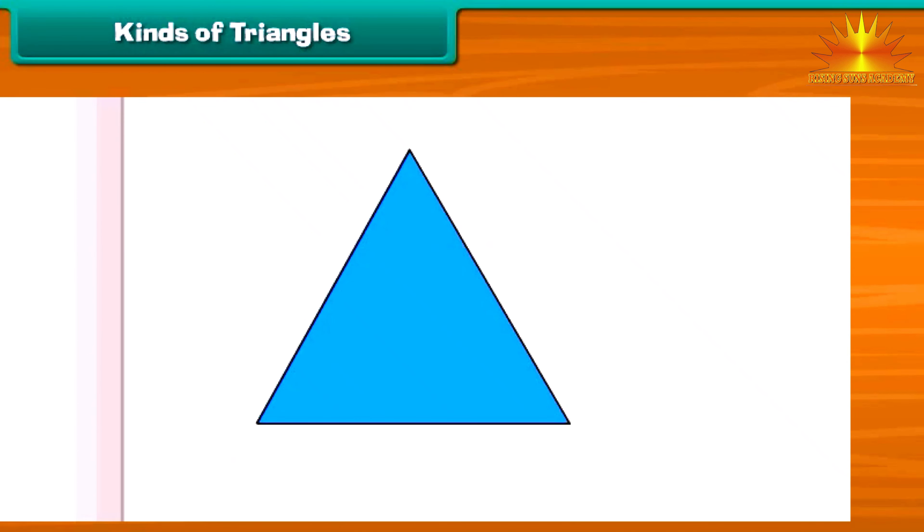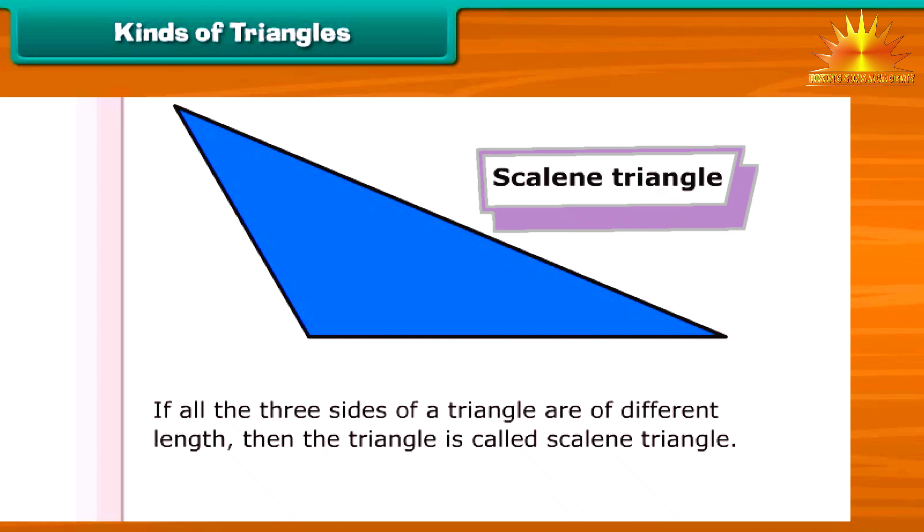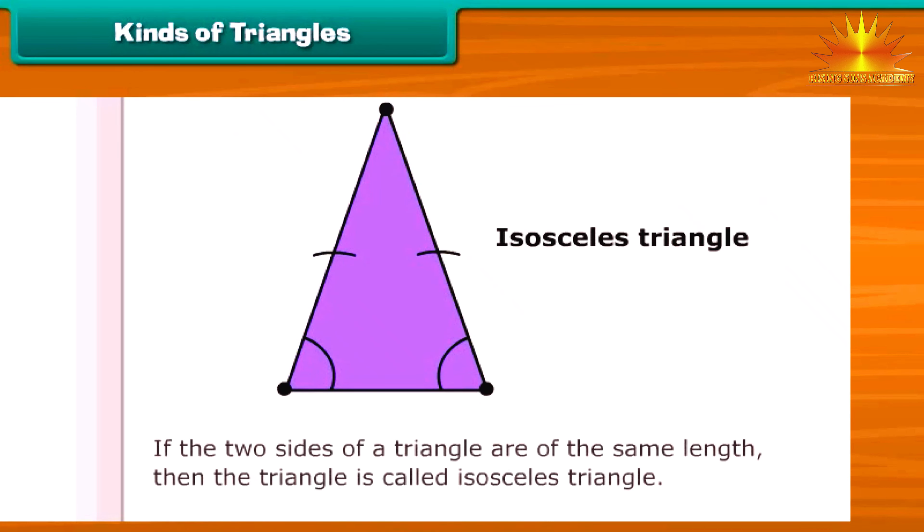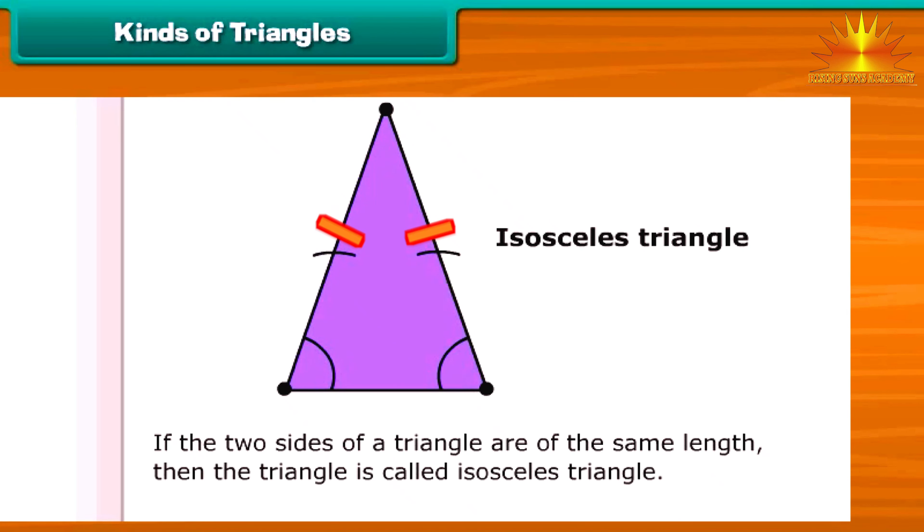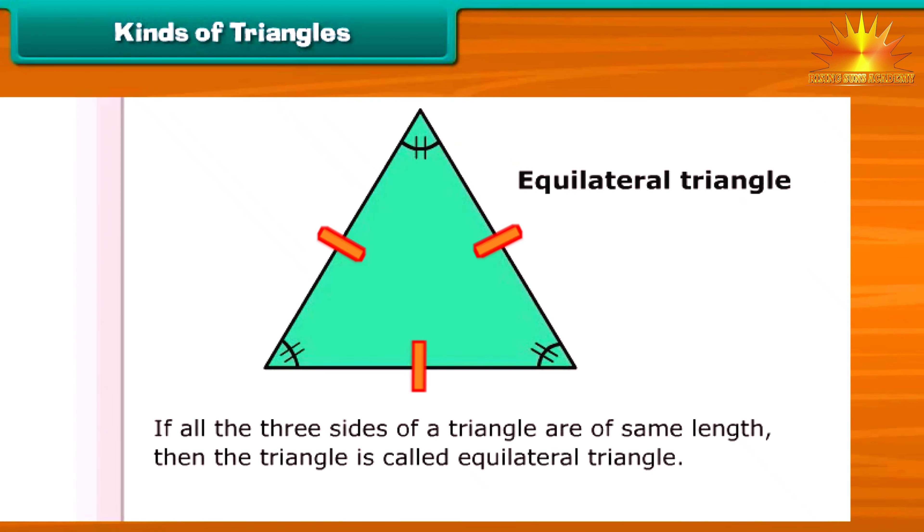The triangles can be classified into three types depending upon the number of equal sides that they contain. If all the three sides of a triangle are of different length, then the triangle is called scalene triangle. If the two sides of a triangle are of the same length, then the triangle is called isosceles triangle. If all the three sides of a triangle are of same length, then the triangle is called equilateral triangle.